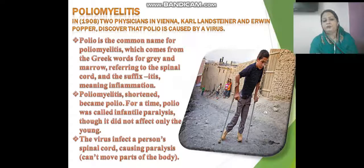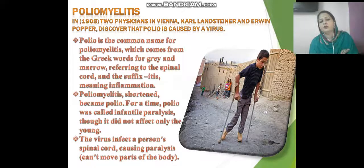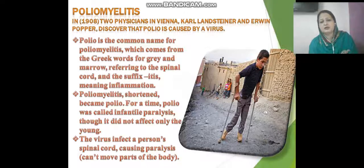Polio was formerly called infantile paralysis. The virus infects a person's spinal cord and can cause paralysis, making the person unable to move their limbs. You can see in the picture a boy who is limping because his lower limbs are not working.